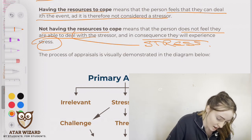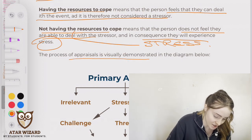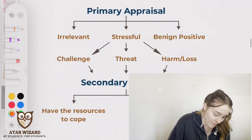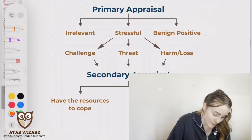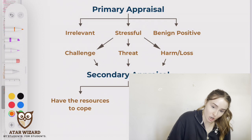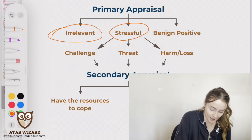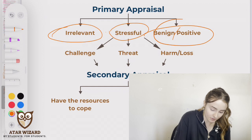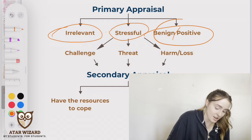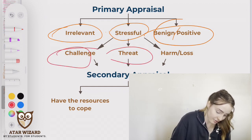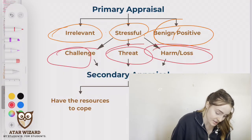The process of appraisals is visually demonstrated in the diagram. In primary appraisal, you determine if the event is irrelevant, stressful, or benign/positive. Then, if it is stressful, you decide if it is a challenge, a threat, or a harm/loss.